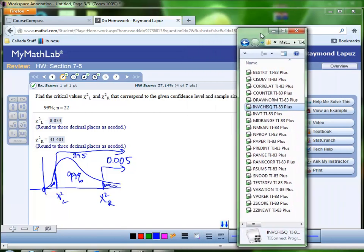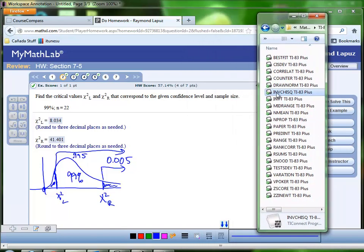We're going to call on the program inverse chi-square, which is a program that you would have downloaded and uploaded from our website and uploaded onto your calculator.